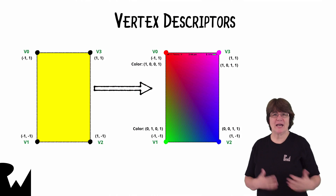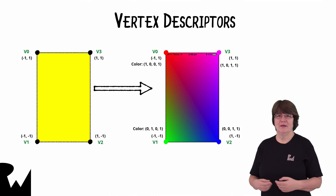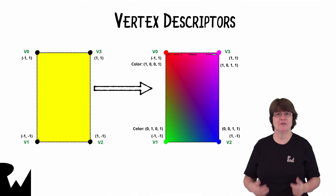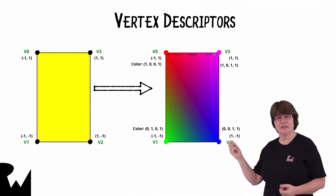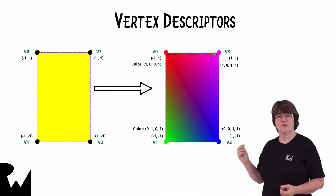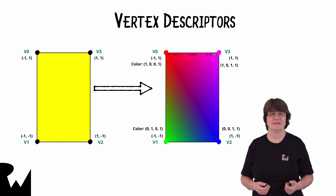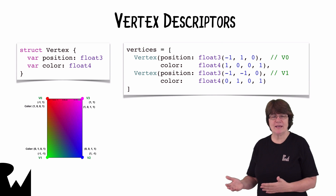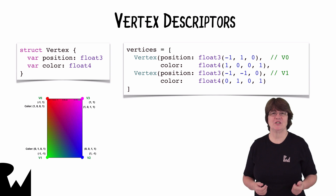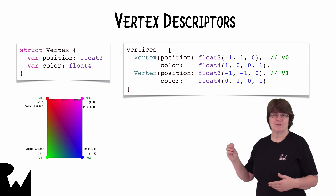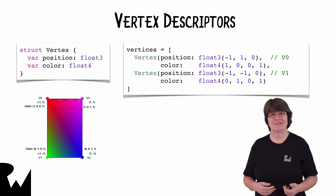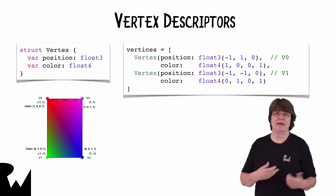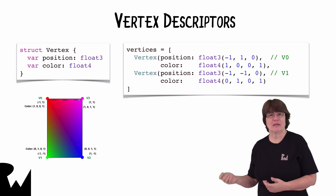So let's have a look at sending color information to the vertex function. To make our quad multicolored, each vertex must have some color information associated with it. For example, vertex 0 at the top left should be red and vertex 1 at the bottom left should be green. So we'll create a vertex struct with position and color and change the array of vertices to include color as well as position. You can see that the vertex at the top left has the color red which is in RGB alpha format and the bottom left vertex has the color green.